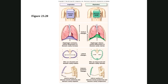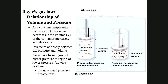During inhalation, we increase the size of the thoracic cavity by dropping the diaphragm and lifting the rib cage. Increase in volume equals decrease in pressure — when we decrease pressure, we move air in. During exhalation, we let the diaphragm relax — it domes up and the rib cage drops, lessening the volume of the lungs, increasing pressure, and creating exhalation.